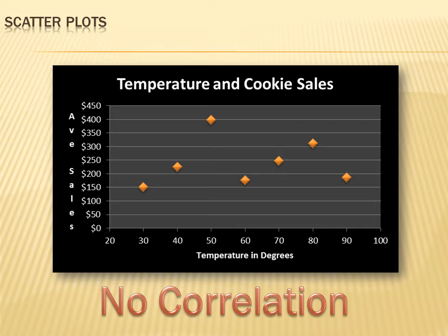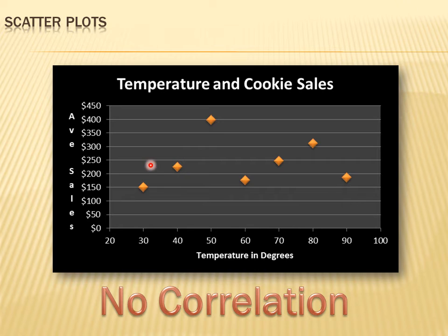So that's what I did. I graphed the temperatures on the x-axis and the average sales on the y-axis. On days when the high was 30, her sales were $150; when the high was 40, her average sales were $230. Can I find a line that runs through these data points? I don't think so — it would have to be a straight horizontal line because there's no simple upward or downward trend. There is no correlation between the temperature in degrees and the average cookie sales.